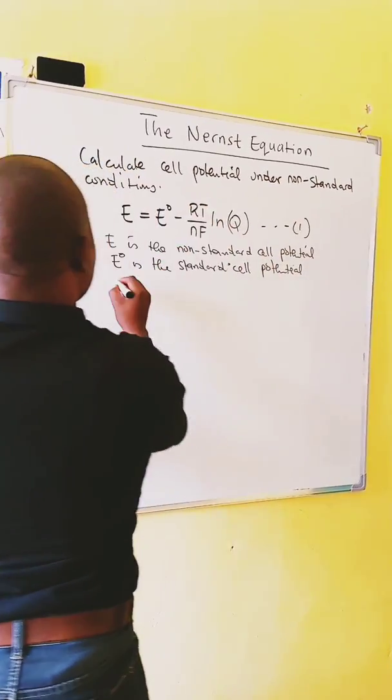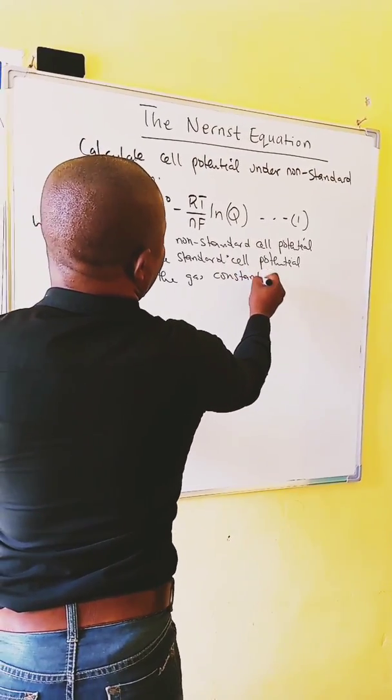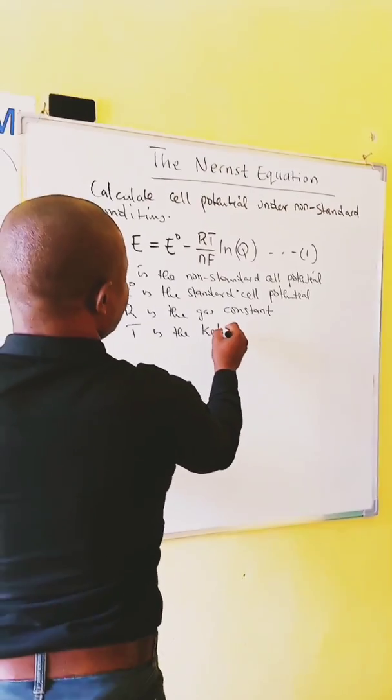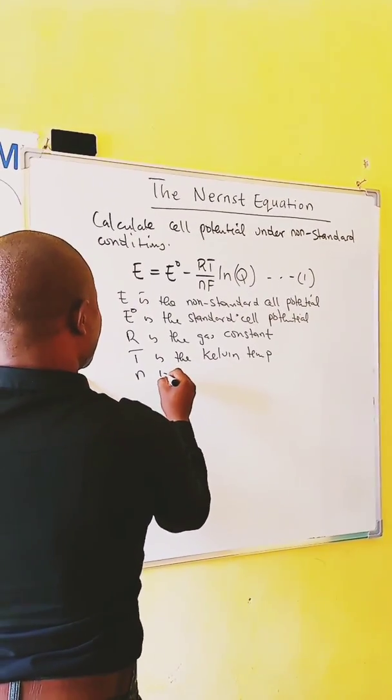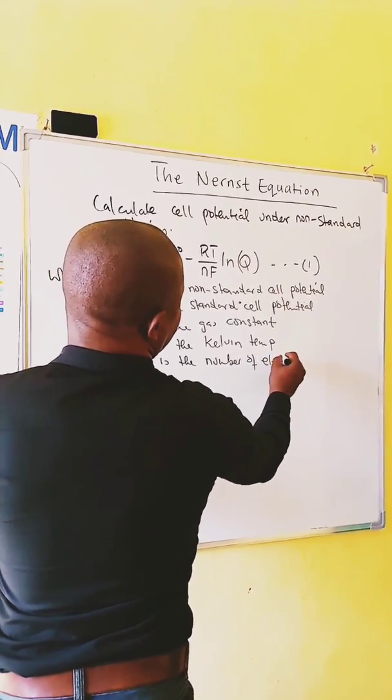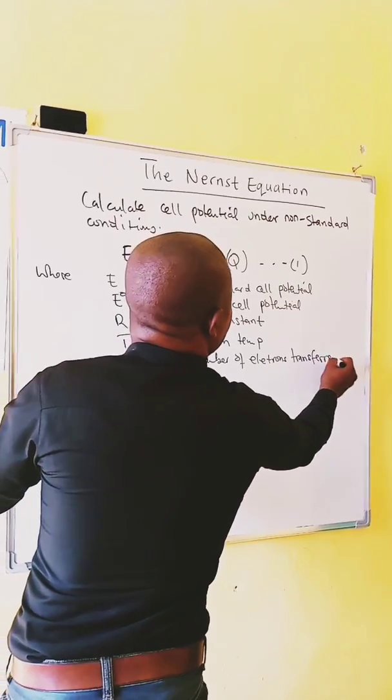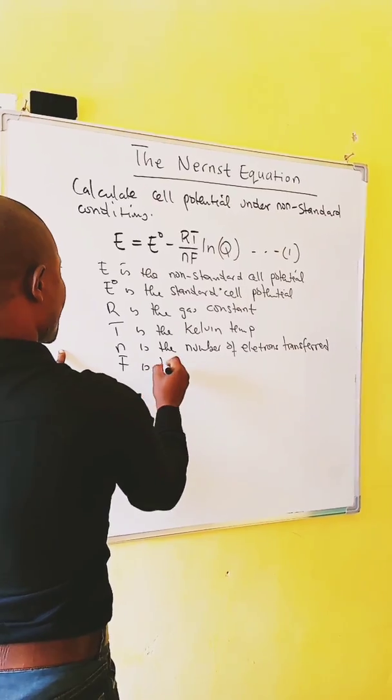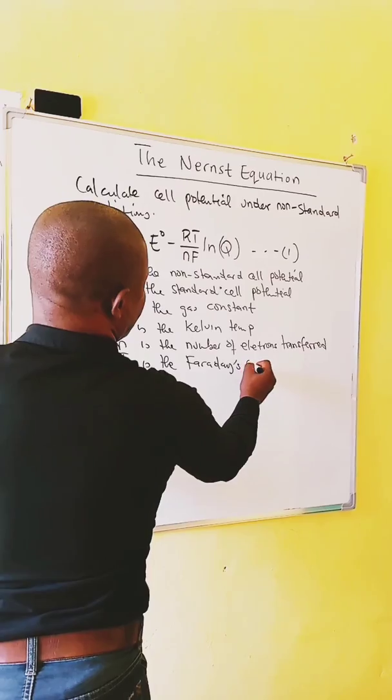R is the gas constant. T is the Kelvin temperature. N is the number of electrons transferred in a balanced reaction. F is the Faraday's constant.